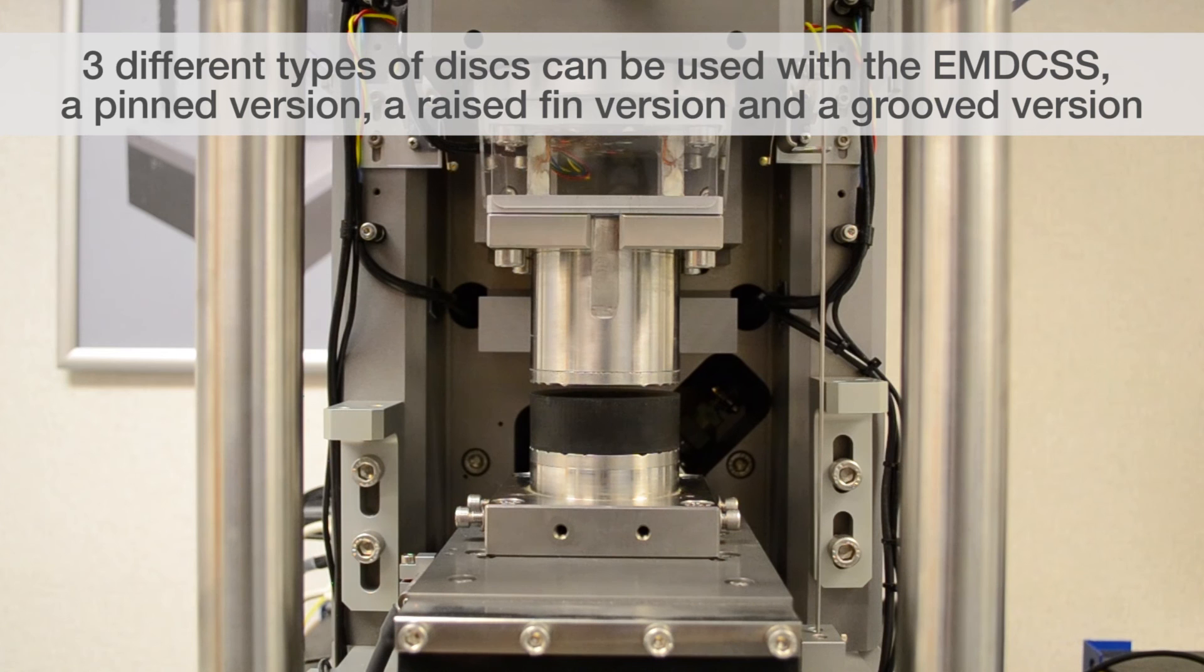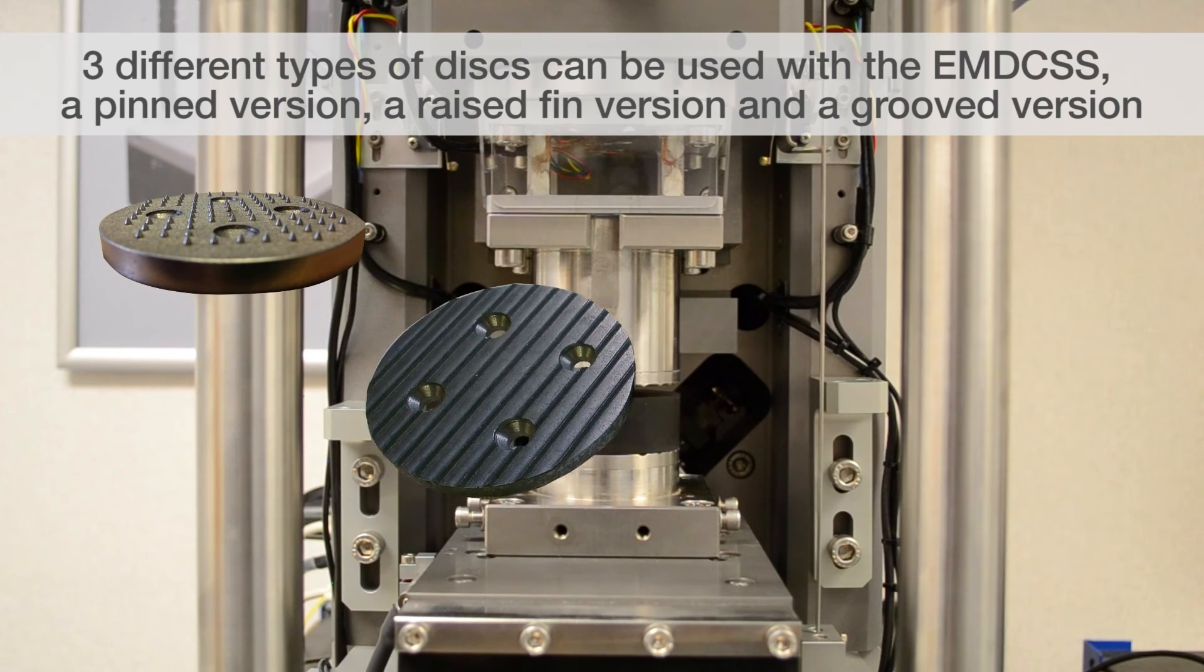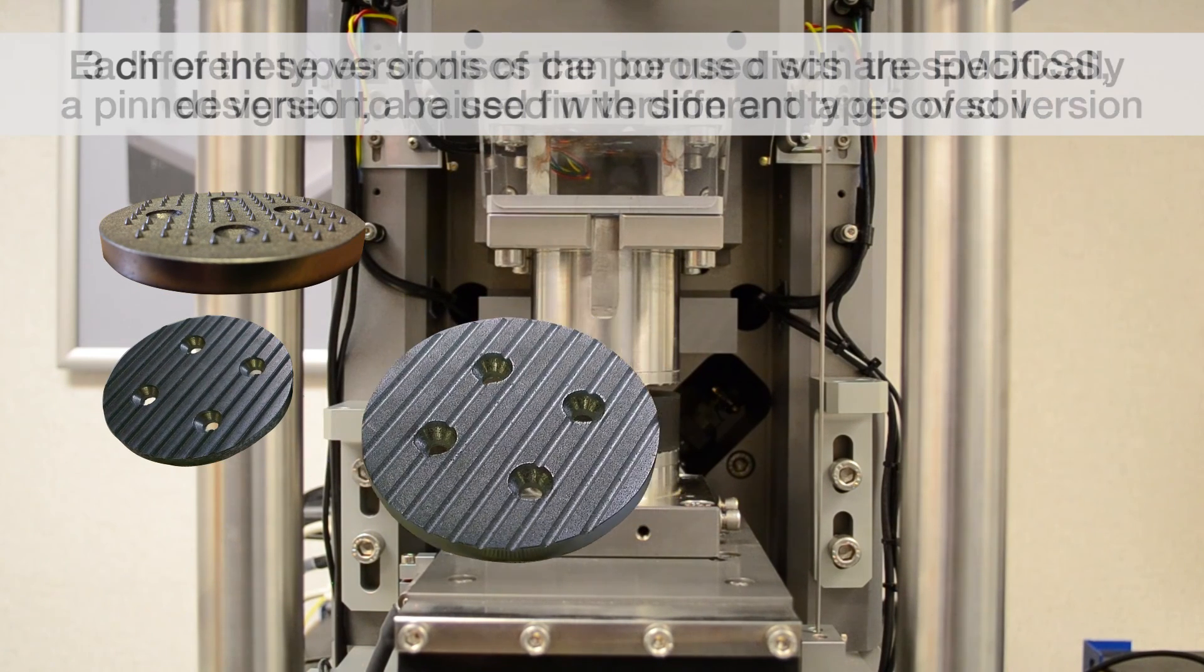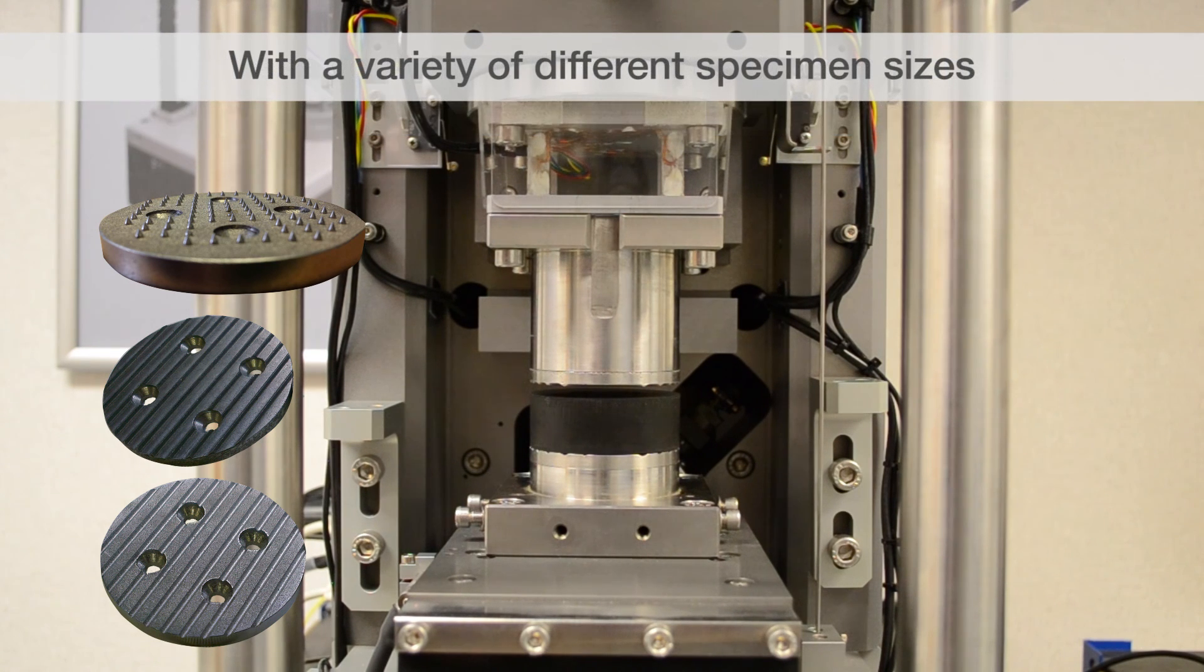GDS offers three different types of discs that can be used within the EMDCSS. We have a pinned version, a raised finned version, and a grooved version. Each of these versions of the porous discs is specifically designed to be used with different types of soil and can be used with a variety of different sample sizes, so you can get the best type of disc for the size of sample that you wish to test.